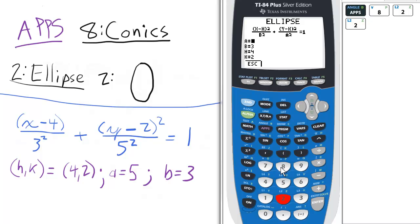And then we're going to have a is 5, b is 3, just as in the last example, and centered at 4, 2. So h is 4 and k is 2.